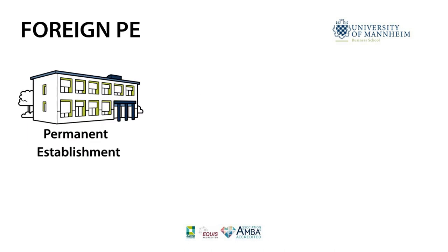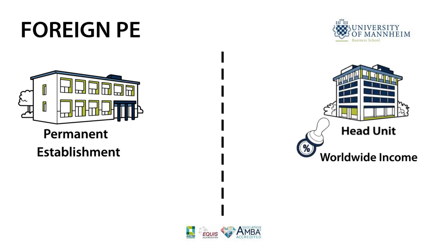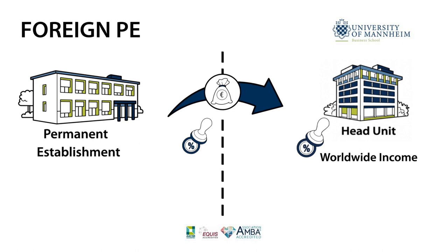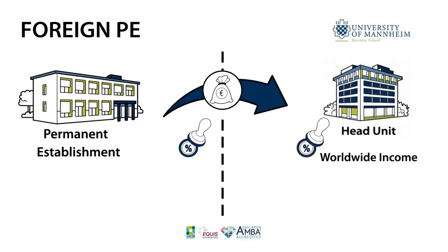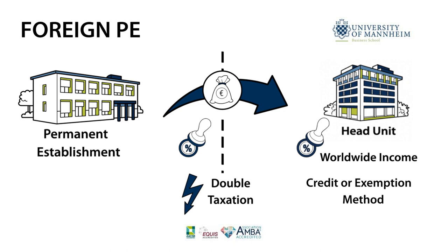If the permanent establishment is located abroad, in addition to the unlimited tax liability on the worldwide income, the head unit is subject to a limited tax liability on the foreign profits earned by the permanent establishment in the source country. Looking at the tax liabilities collectively, international double taxation arises. To eliminate this, the resident's country can apply the credit or exemption method, which are explained in separate videos.